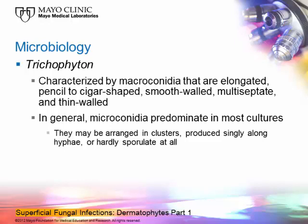There are three genera of dermatophytes in the clinical laboratory. The first genus is Trichophyton. It's characterized by macroconidia that are elongated, pencil-shaped, and cigar-shaped — smooth-walled, multi-septate, and thin-walled. The problem is that most of the time you don't see these macroconidia. You see microconidia, and the arrangement and sometimes the shape of these microconidia is what we use for traditional identification.